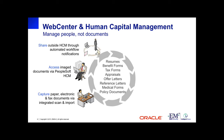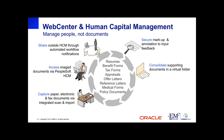Documents can be shared through automated workflow and viewed in a variety of ways — such as email or other applications — simply via a reference to the content repository. Documents can be marked up, annotated, and those annotations can be secured so they're only visible to intended recipients. Consolidation allows you to organize documents into virtual folders shared across the enterprise. Storing all documents in one secured, centralized location allows you to manage access and ensure information is only available to authorized users.